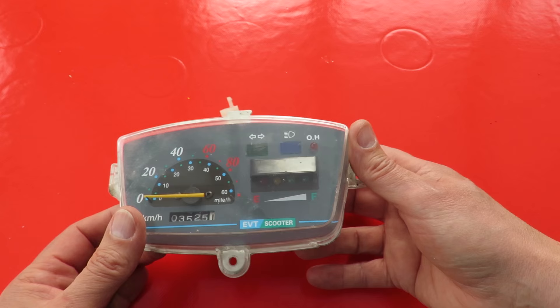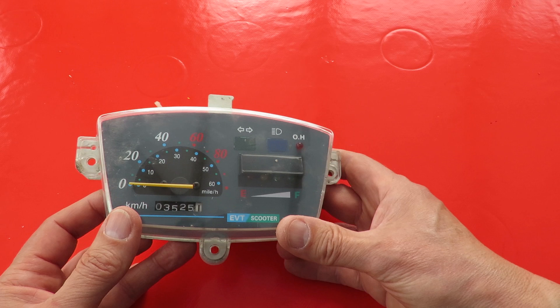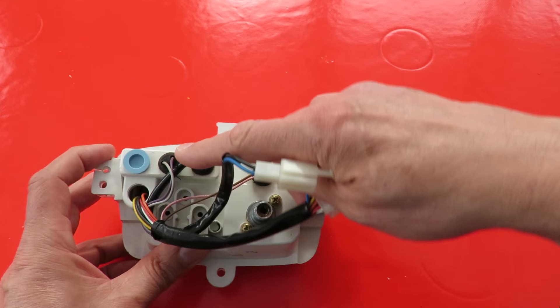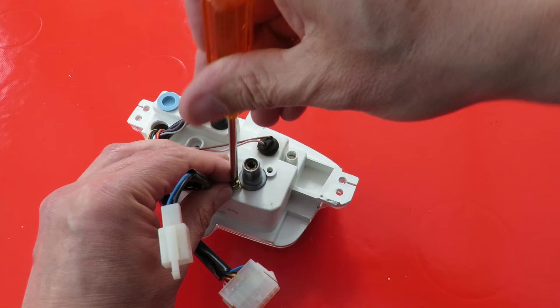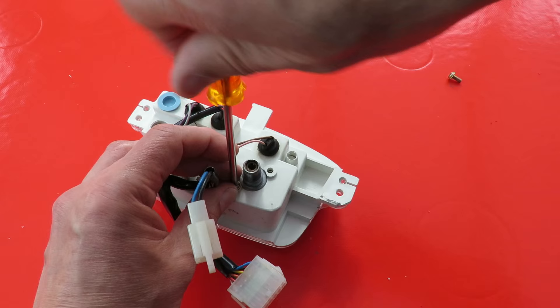So we'll take it apart. EVT scooter. I've got a few bulbs, light bulbs and just a couple of screws to undo. This is where the speedo cable would normally go in here.